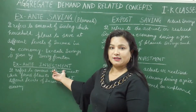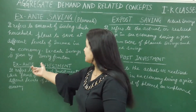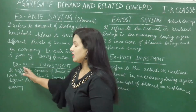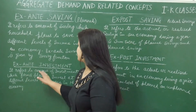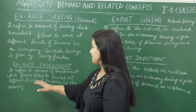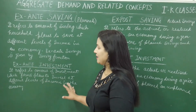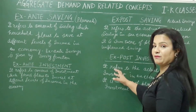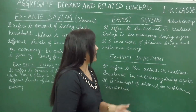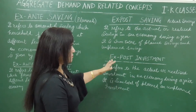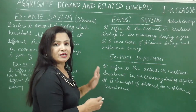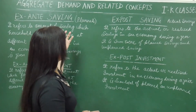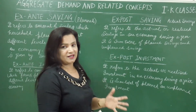Next is ex-ante investment, which is similar to ex-ante savings. Ex-ante investment means planned investment. It refers to the amount of investment which firms plan to invest at different levels of income in an economy. The firm sector does this planning. Similarly, ex-post investment means actual or realized investment. It refers to the actual or realized investment in an economy during a year, which is the sum total of planned and unplanned investment.